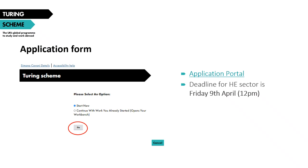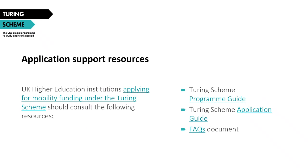Before we look at those qualitative questions in depth, here is a reminder of the link to apply, which you'll also find on our Turing website. The deadline is Friday the 9th of April at midday, and the application form should be completed in full online. You'll need to register an account on the application portal before you can get started. All resources are published on the Turing Scheme website, and you should familiarise yourself with the programme guide, application guidance, and the FAQs document.